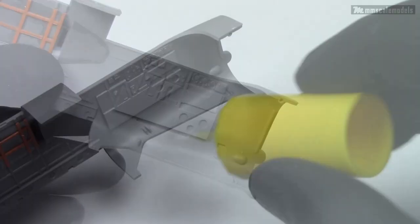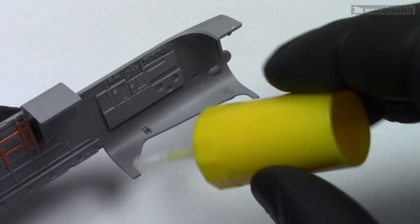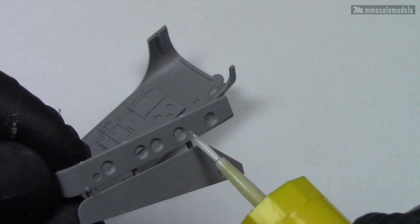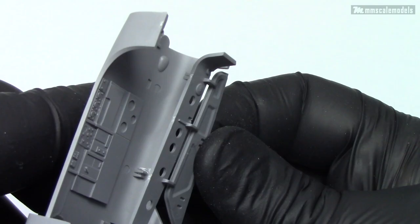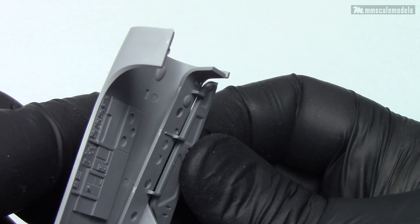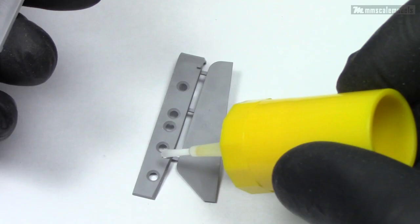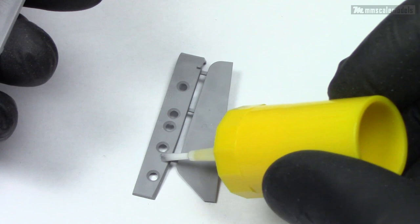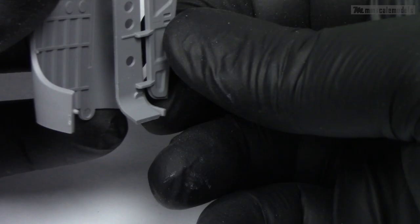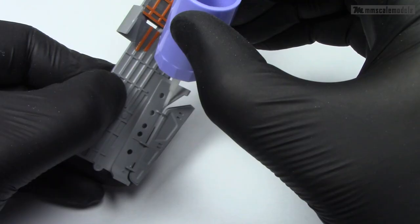One interesting feature of this kit are the gear bay doors which are molded together with the sidewalls. I get the point that installing these doors can be extremely frustrating task right at the end of the build in most other cases. But I also have some concerns about how long this will survive before I knock them off. Anyways this is an interesting design feature.